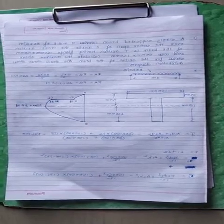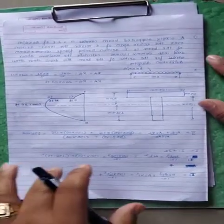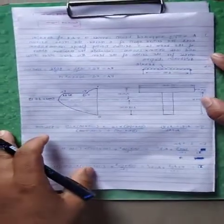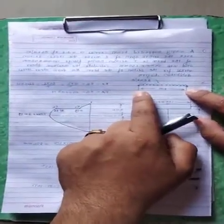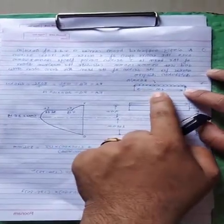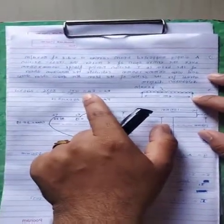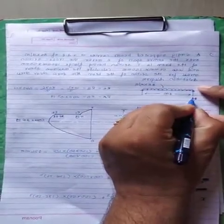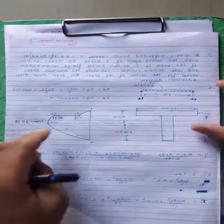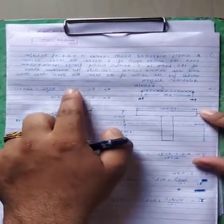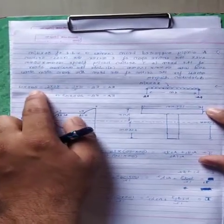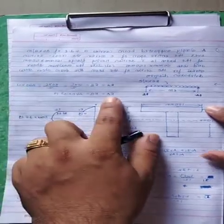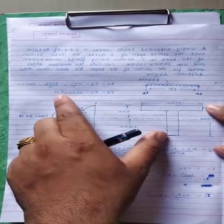In the problem statement, the shear force is not directly given — we have to calculate it. We have a simply supported beam carrying a UDL of 80 kilonewton per meter over an entire span of 6 meters. RA equals RB equals W times L divided by 2, that means 80 into 6 divided by 2, which comes to 240 kilonewton. So RA equals RB equals 240 into 10³ Newton. This is the shear force.